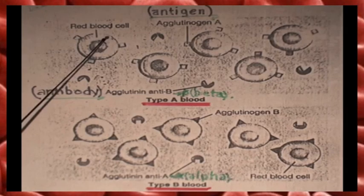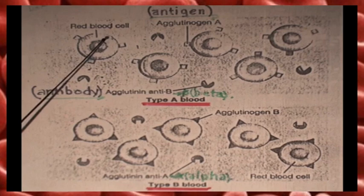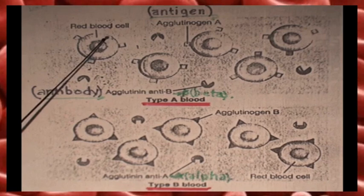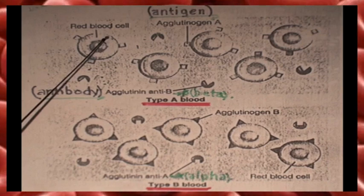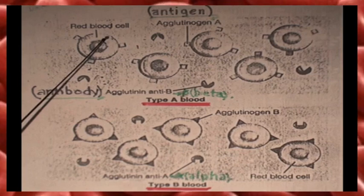These are the classic blood groups: A, B, AB, and O. The A, B, and AB antigens are present on the surface of the red blood cells, genetically inherited from birth till death.